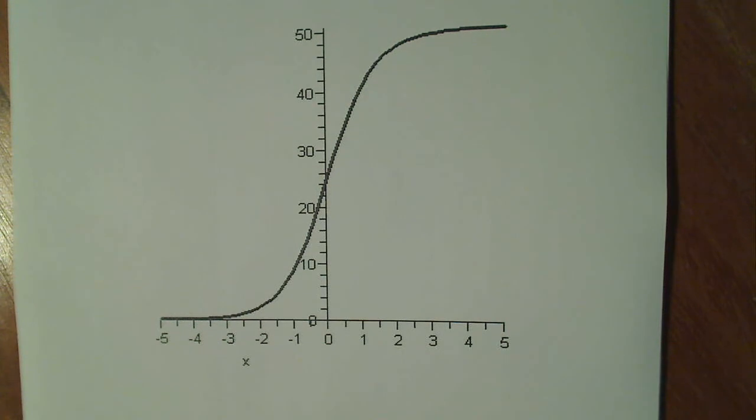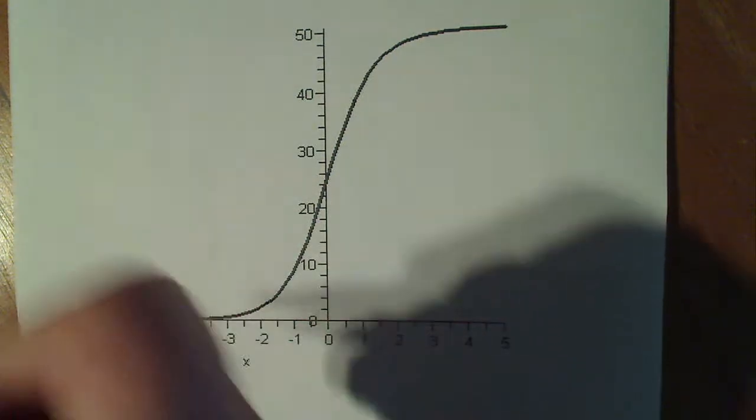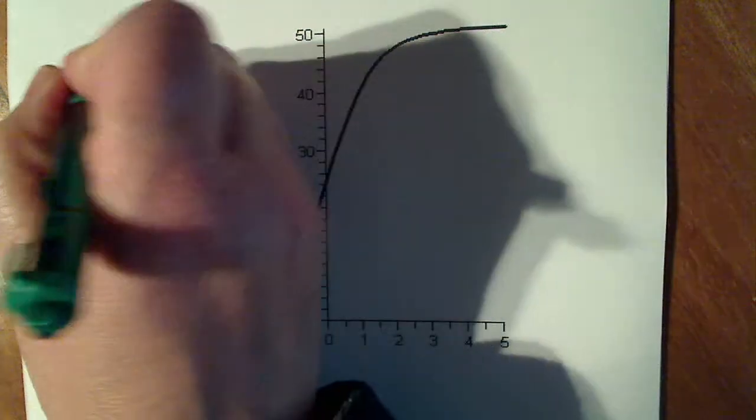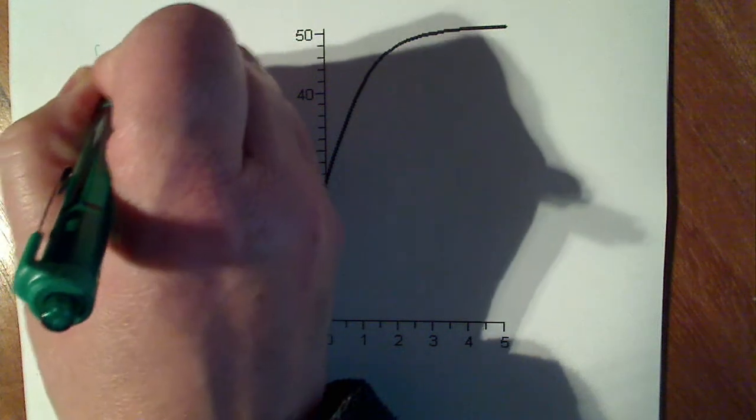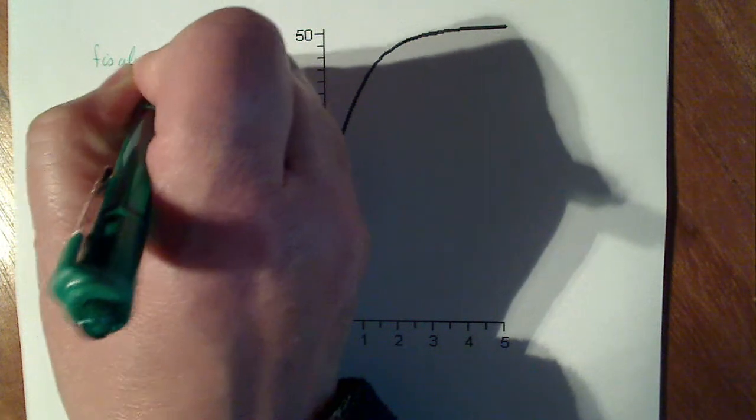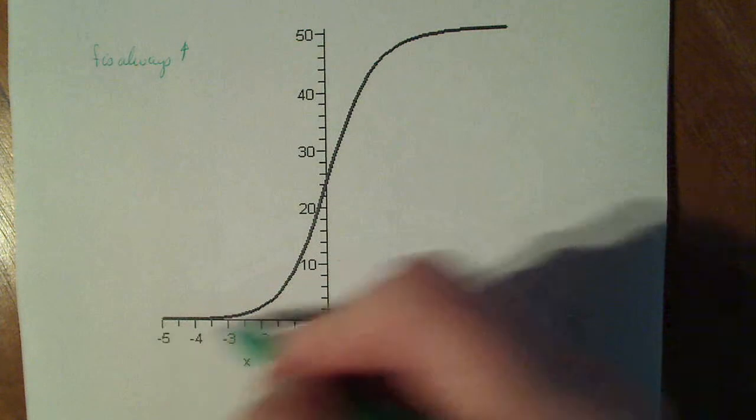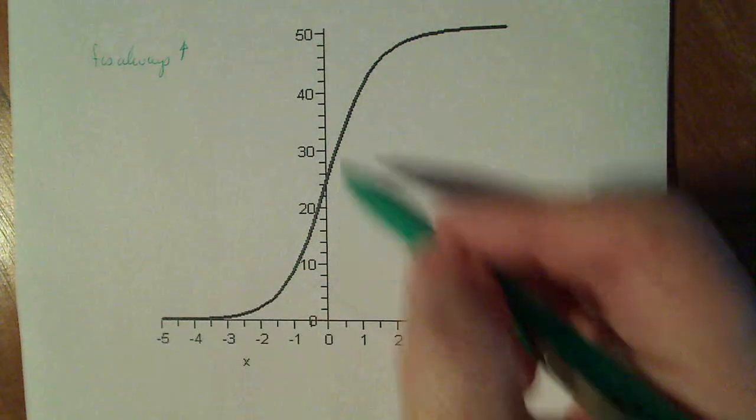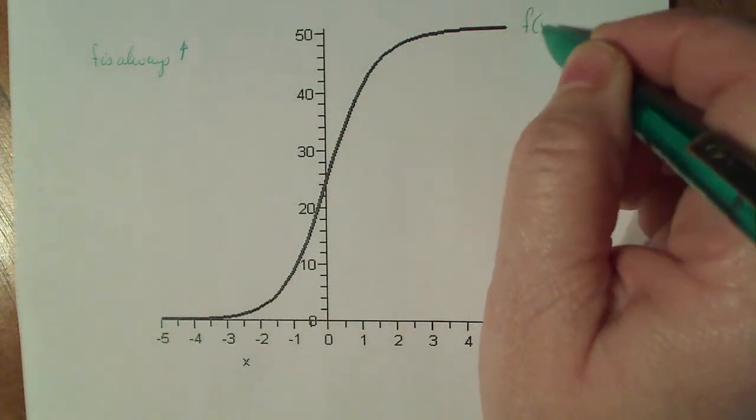Now looking at this graph, I noticed several things that are going to help me draw the graph of f prime. First of all, f is always increasing. See, from this end to this end, f is always increasing. Remember, this is a graph of f of x.